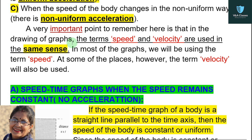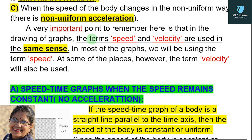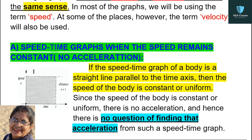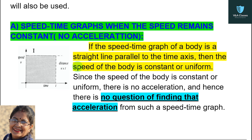A very important point to remember is that in the drawing of graphs, the terms speed and velocity are used in the same sense. In most graphs we will use the term speed, however the term velocity will also be used at some places. Now, Type 1 — constant speed or no acceleration: if the speed-time graph of a body is a straight line parallel to the time axis, then the speed of the body is constant or uniform.